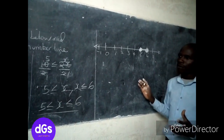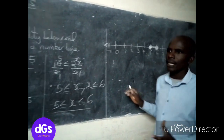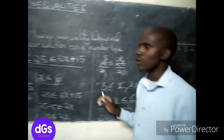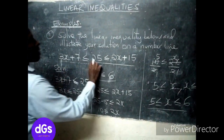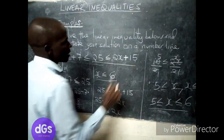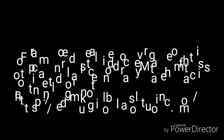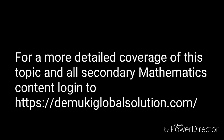One important thing to note is to combine both parts of the inequality and then represent the combined solution on the number line. That is how you represent the solution.